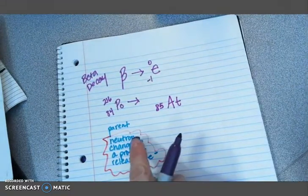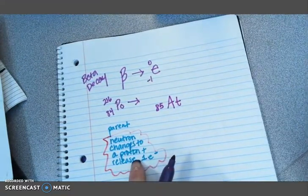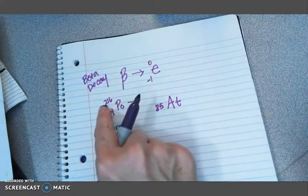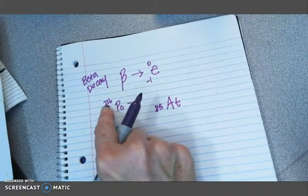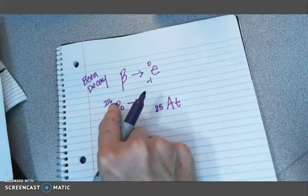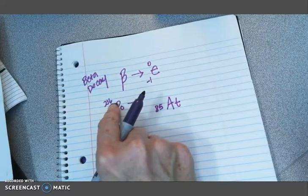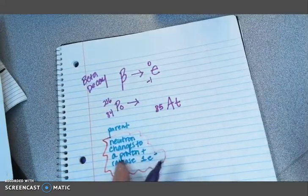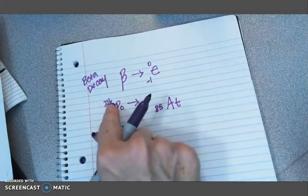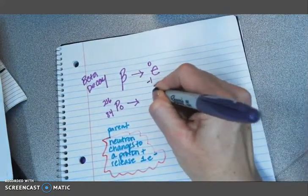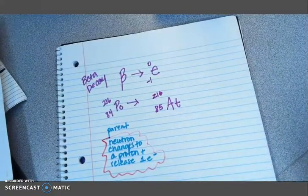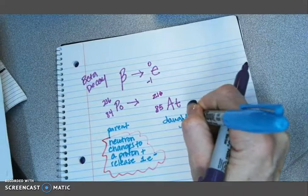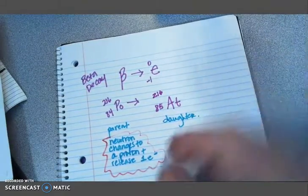Now this is the trickier part, because a neutron is changing to a proton. We still have the same number on top. You subtract a neutron, which would make that 215, but then you add a proton, which makes it back to 216. Does that make sense? You're subtracting a neutron, because you're changing a neutron, but then you're adding a proton. So the number on top stays the same. So then your daughter is astatine.